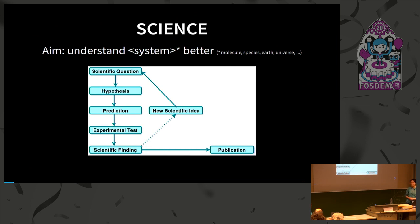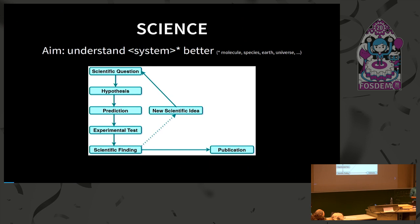The method used for this is that there's a scientific question at the beginning, then a hypothesis is formed, from this a prediction is formed, and this can be tested in an experiment. At the end there's a scientific finding, either confirming or rejecting the hypothesis, and to communicate this to other scientists, the method of choice is to write and publish a paper.